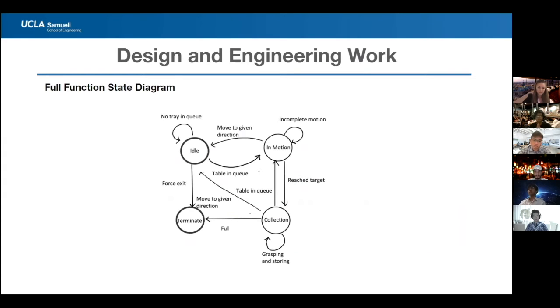For this robot, this is the full view of how the system will work. We have four main states: idle, in motion, collection, and terminate. These states will be further explained in later sections.